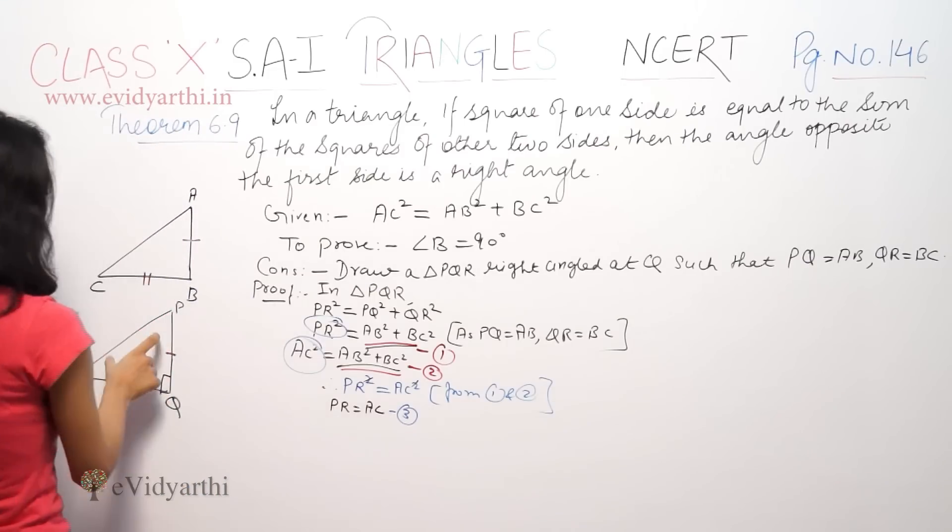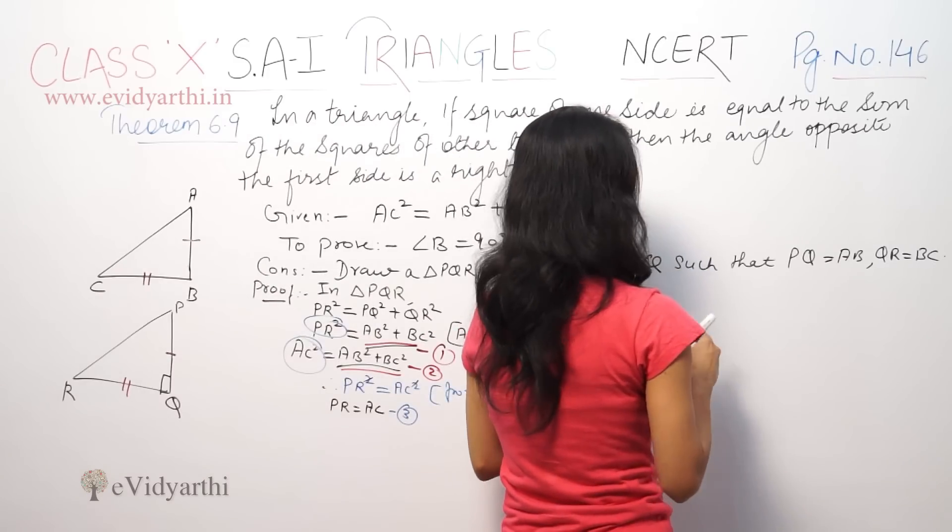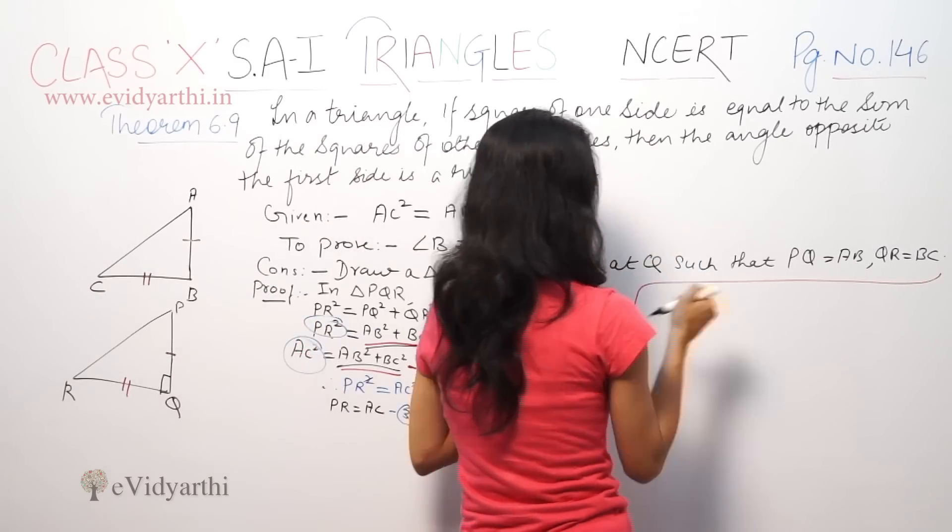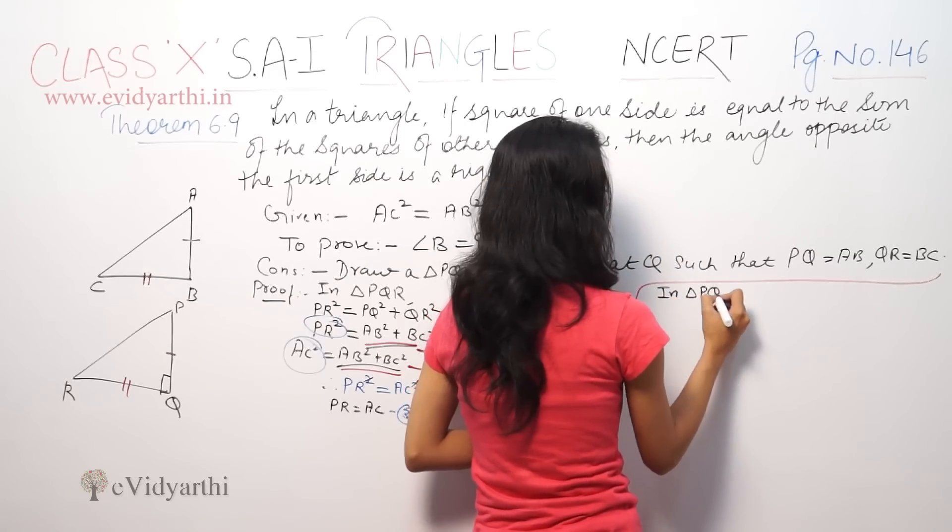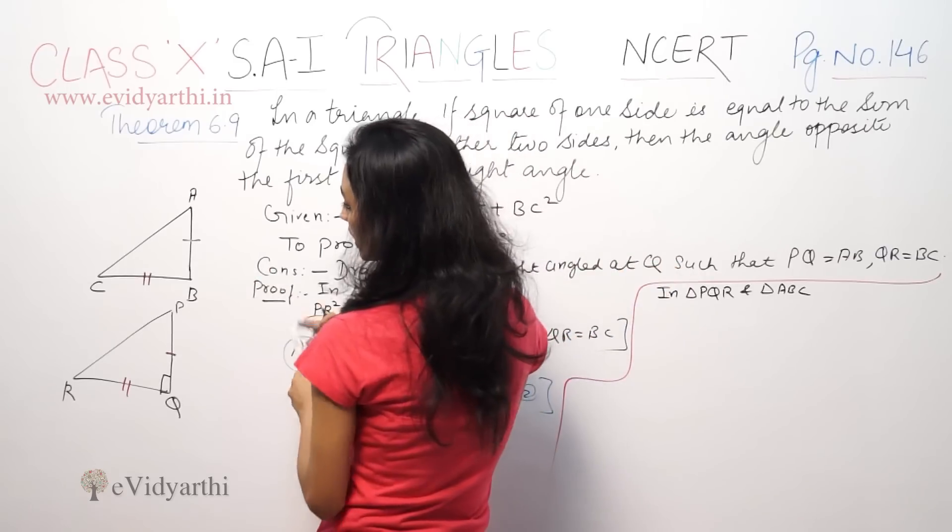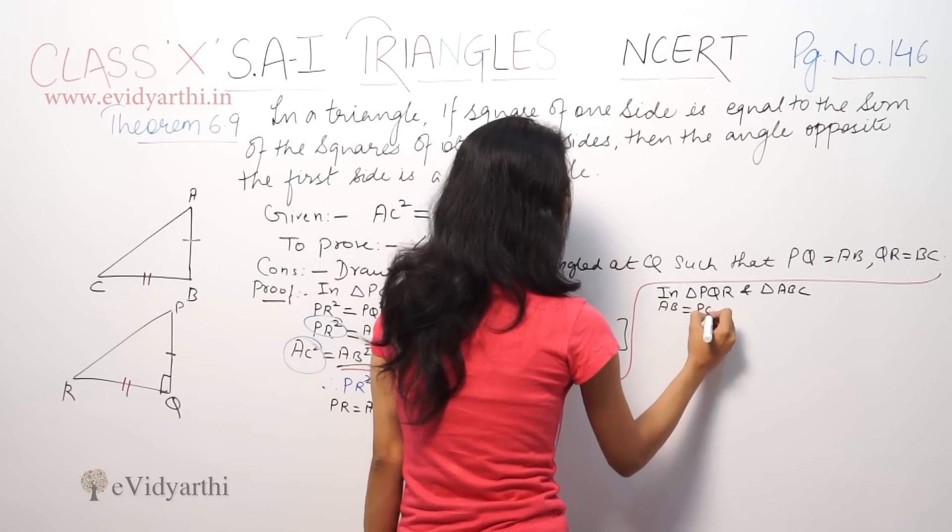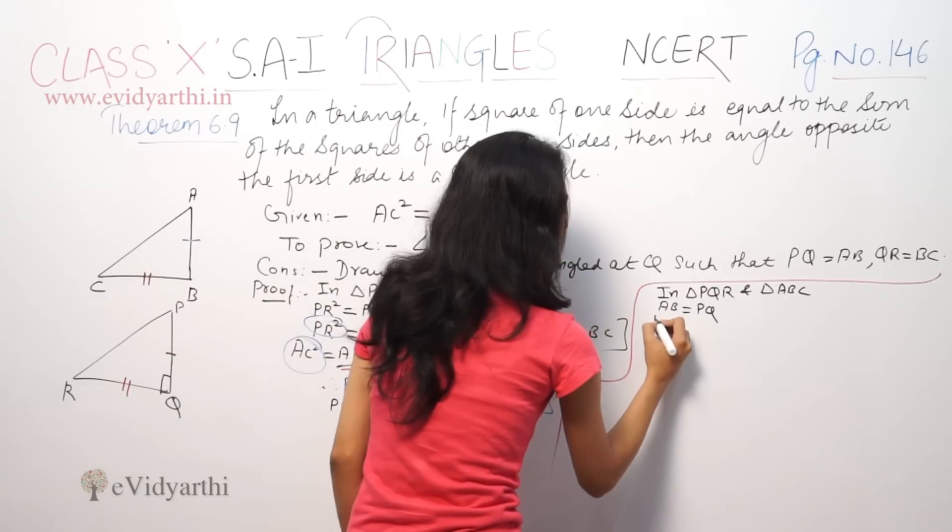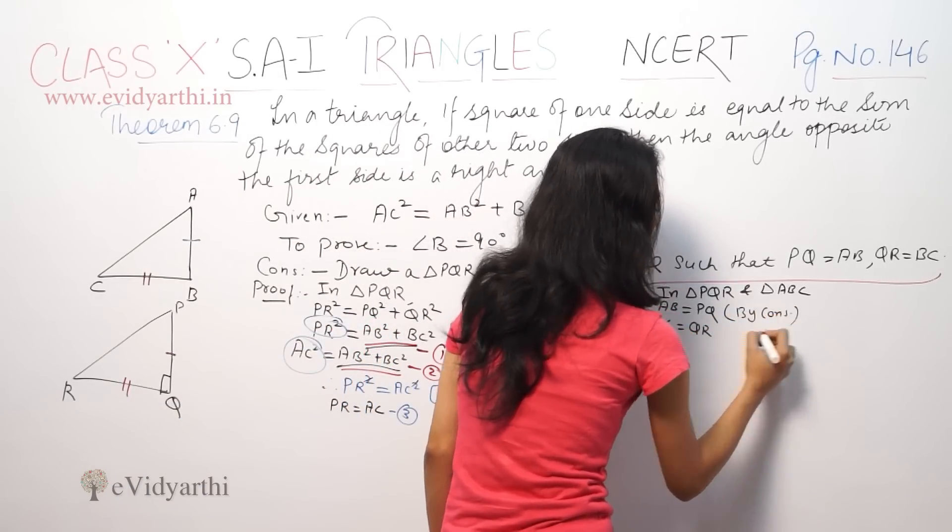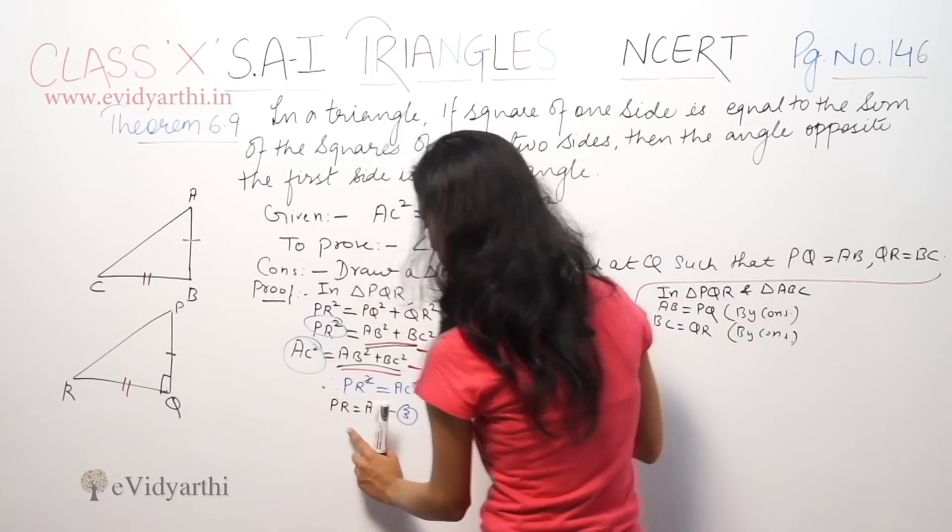Now, if I consider these two triangles together, in triangle PQR and triangle ABC, what is given? We have AB equal to PQ and BC equal to QR by construction.